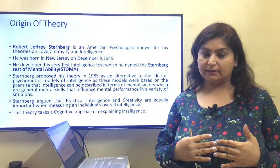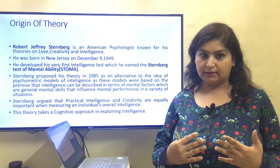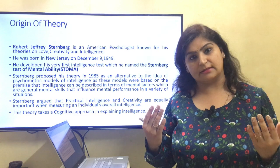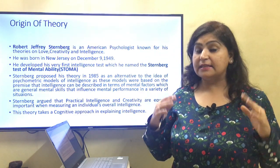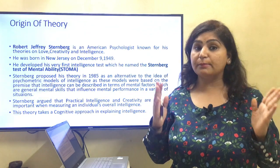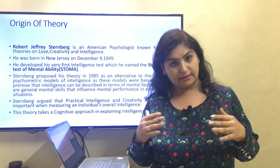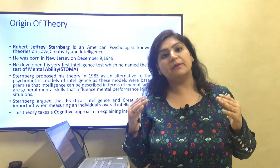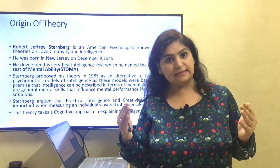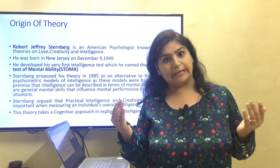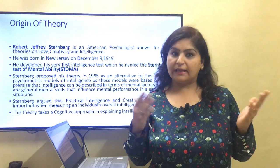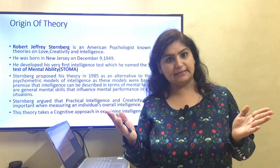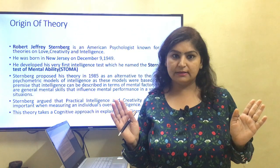Till now we discussed the psychometric theories of intelligence. It means we were discussing that intelligence is made up of some factors — mental factors, which are mental skills that you employ in order to accomplish any cognitive task, such as Spearman's G-factor, Thurston's seven primary mental abilities, and Guilford's model. We have already studied that.